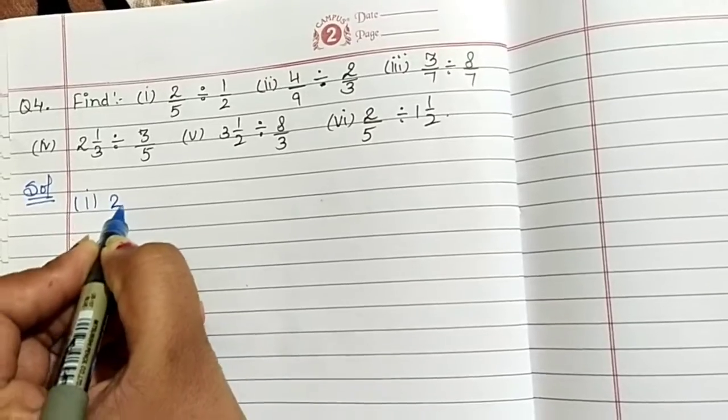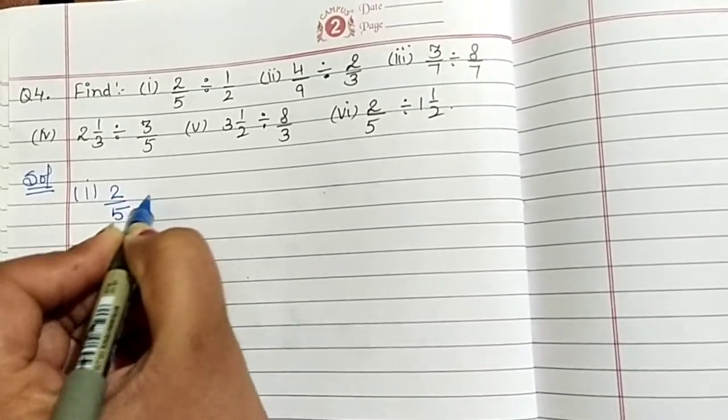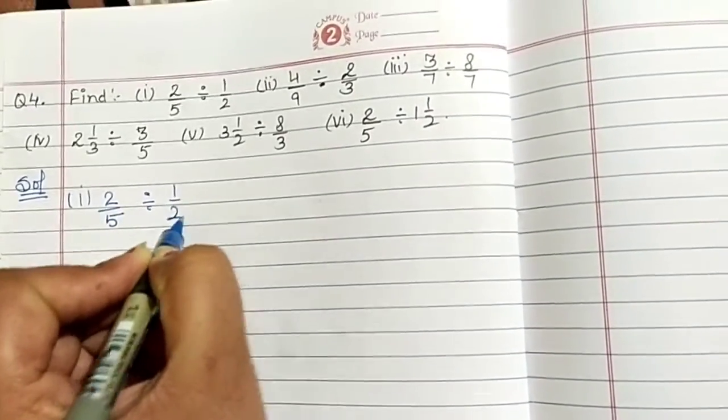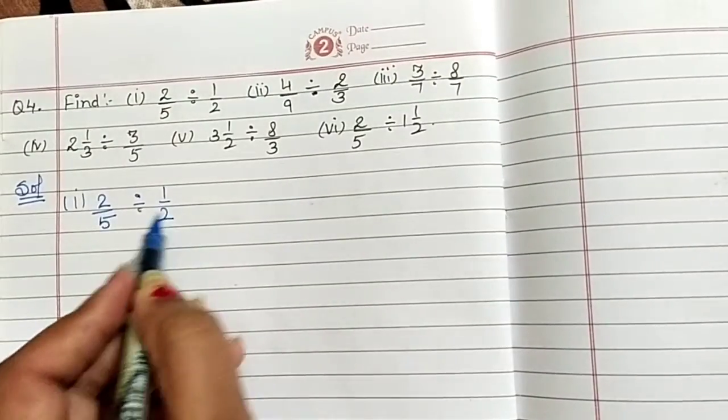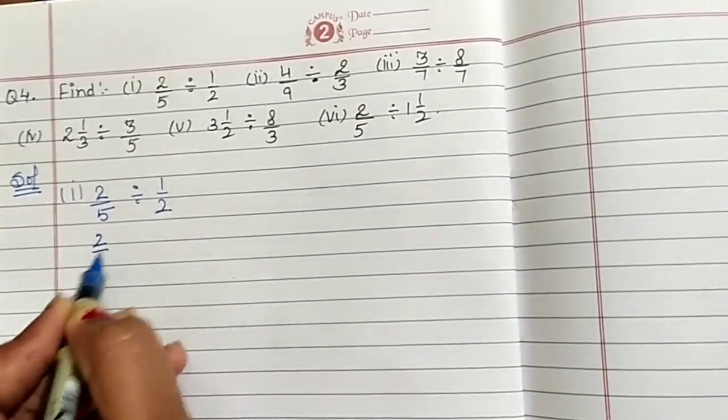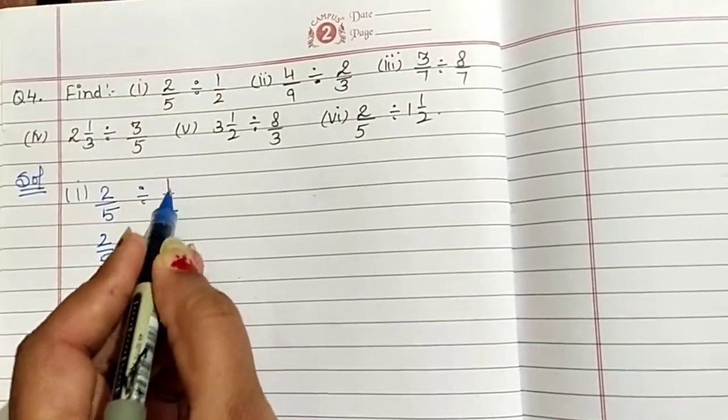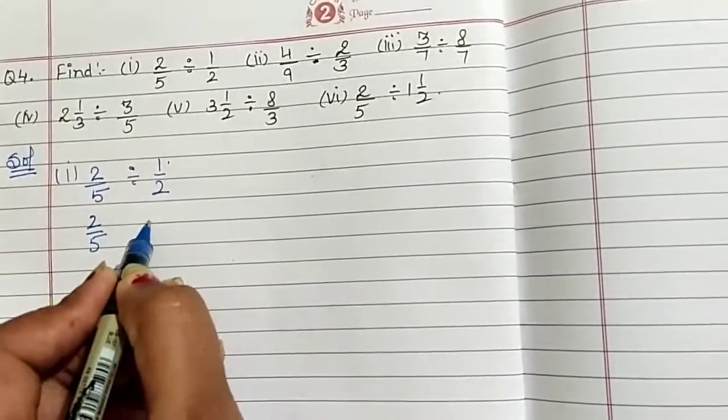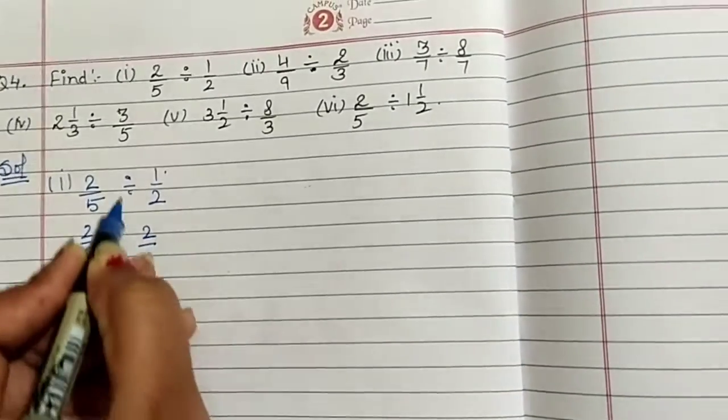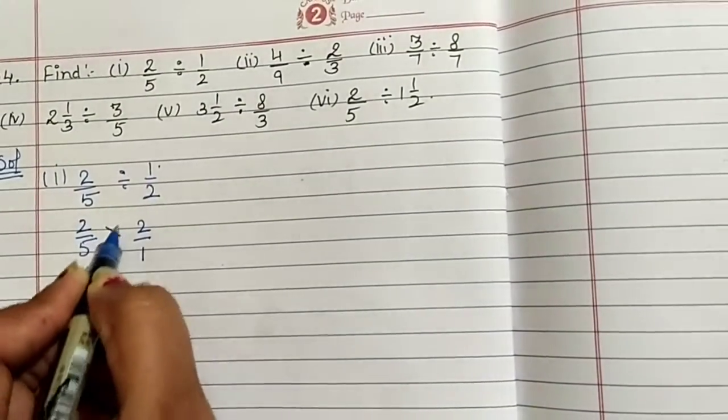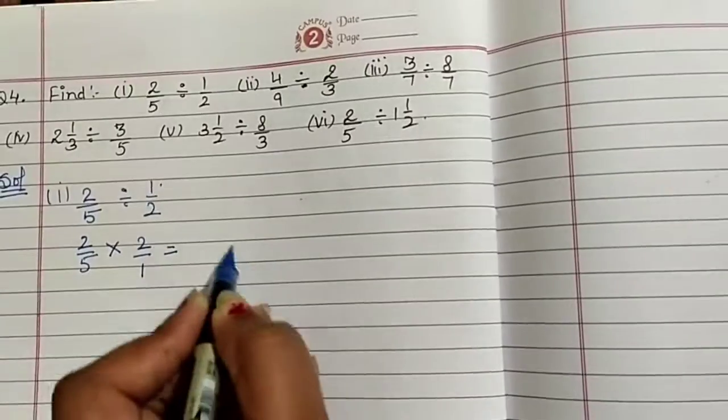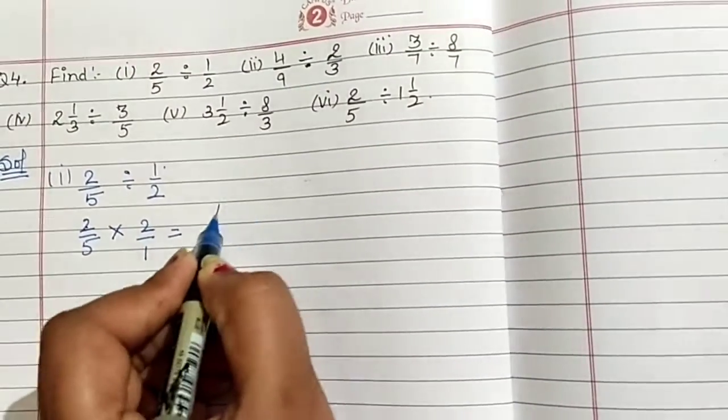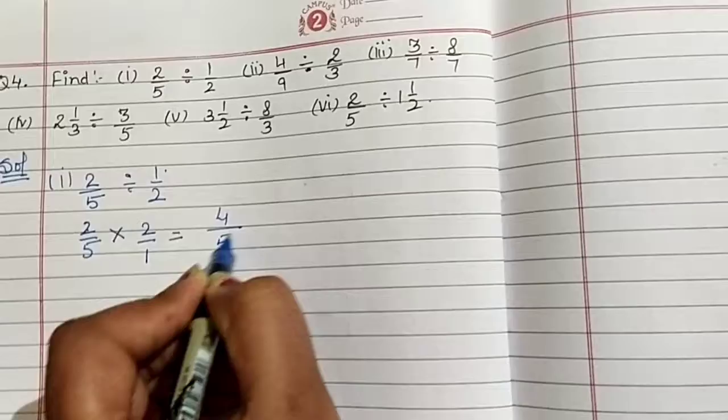Take first part 2 by 5 divided by 1 by 2. Similar as first term as it is 2 by 5 and second term is reciprocal. Take second term reciprocal that is 2 by 1 and division sign changes to multiplication. Then get the answer. That is 2 twos are 4, 4 by 5.